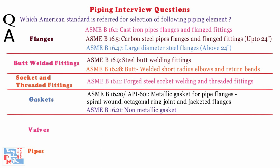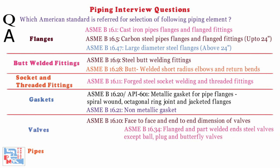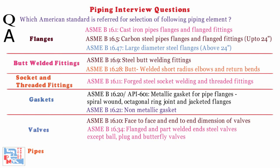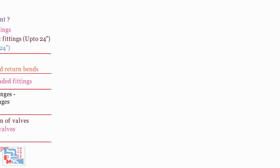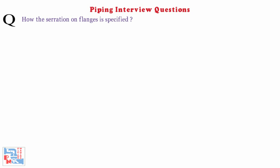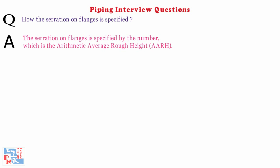ASME B16.21 is for non-metallic gaskets. For valves: ASME B16.10 is for face-to-face and end-to-end dimensions of valves. ASME B16.34 is for flanged and butt welded end steel valves covering pressure and temperature ratings, except ball, plug, and butterfly valves. For pipes: ASME B36.10 is for welded and seamless wrought iron pipes, and ASME B36.19 is for stainless steel pipes.